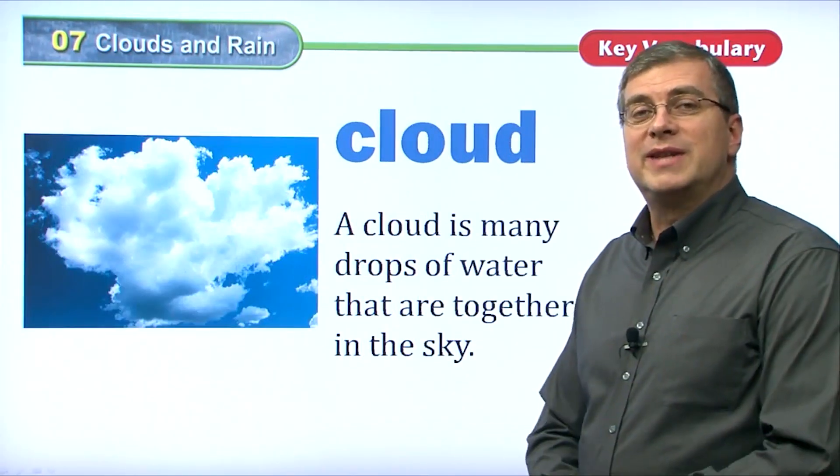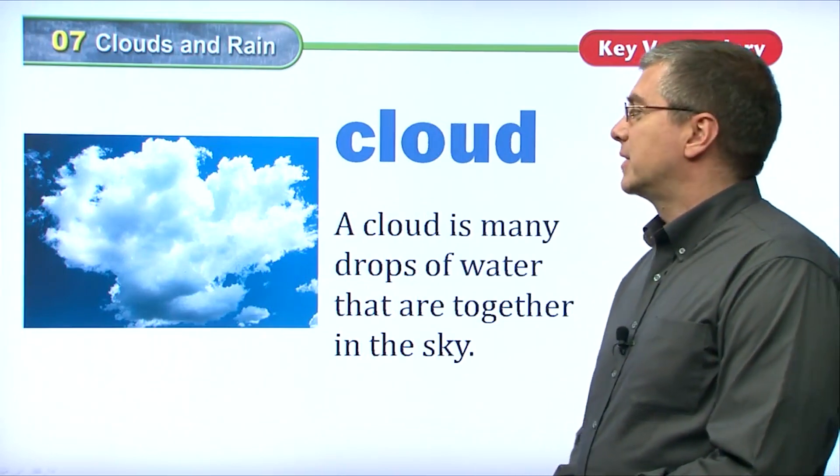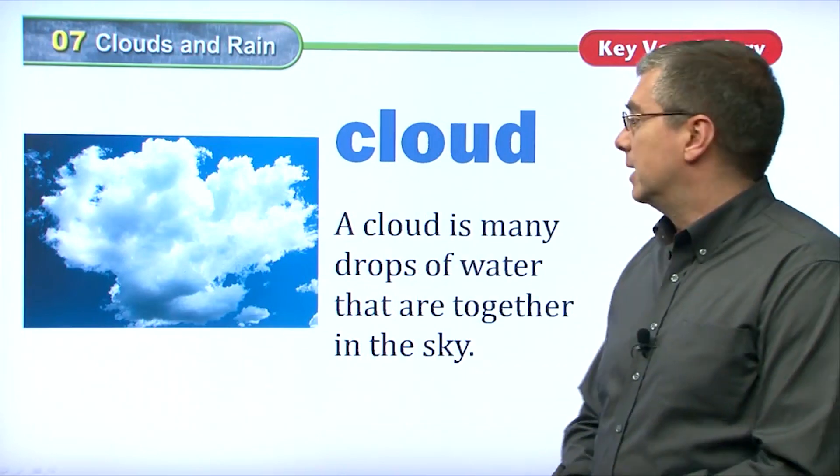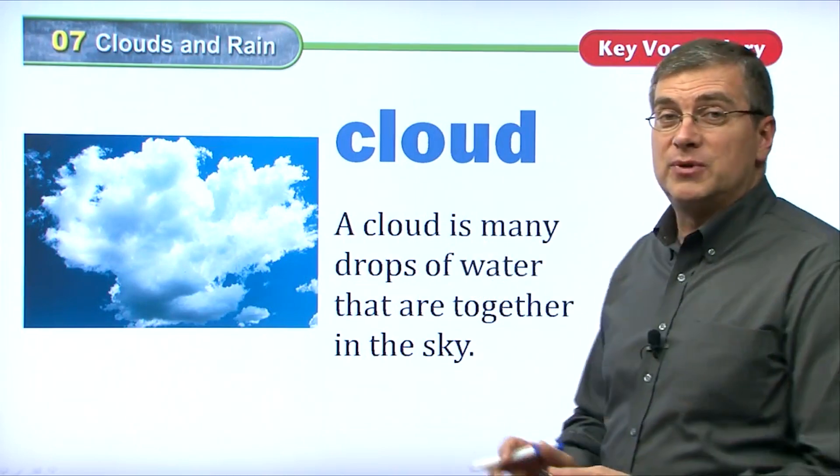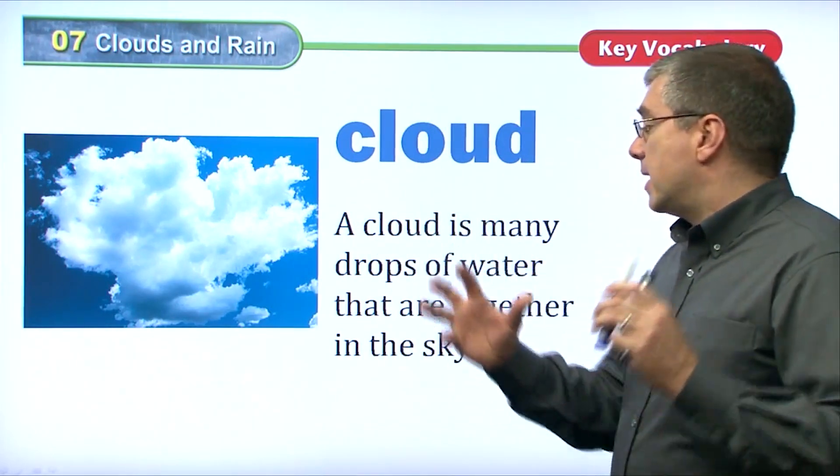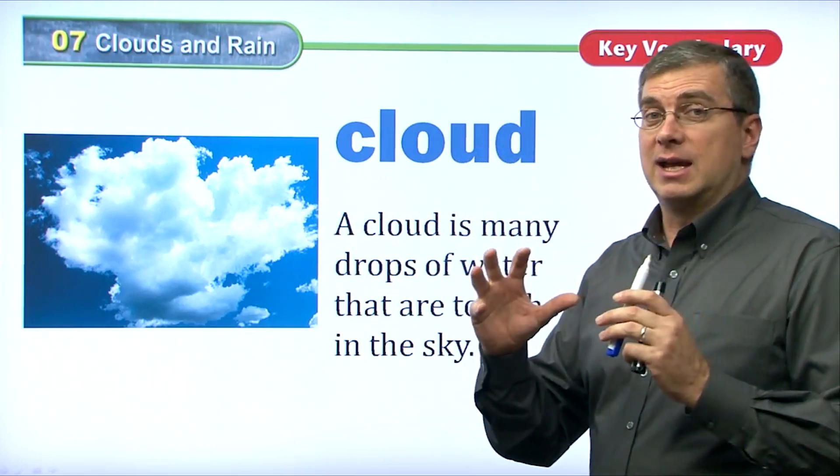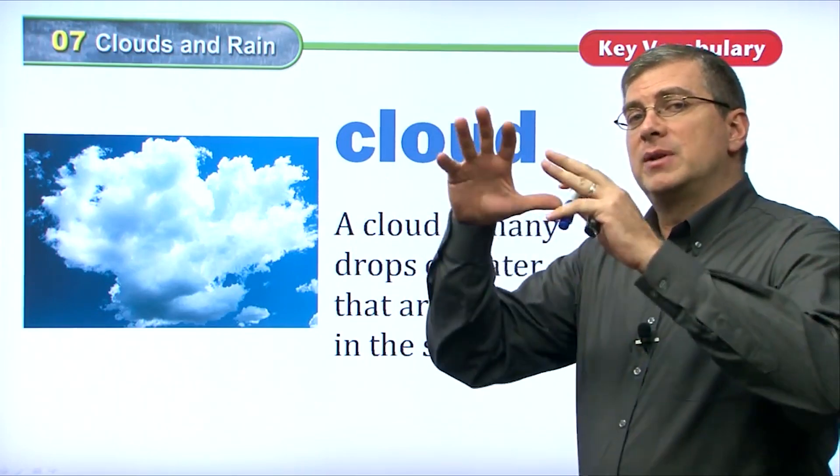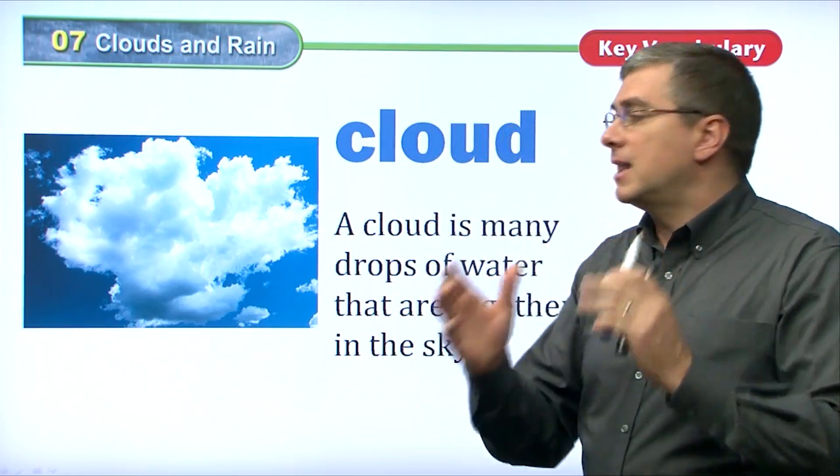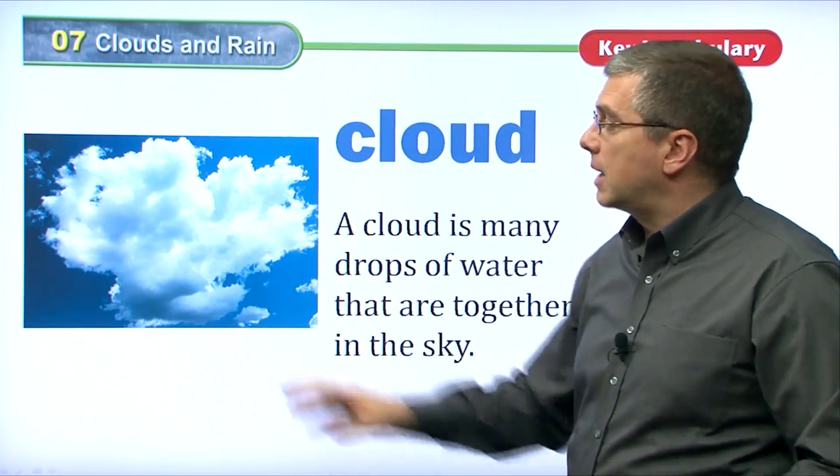Let's look at one stage or one step of the water cycle, and we're talking about a cloud. A cloud is many drops of water that are together in the sky. So water rises up into the sky, they get together and they form clouds, and that's what a cloud is.